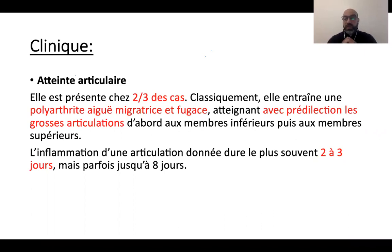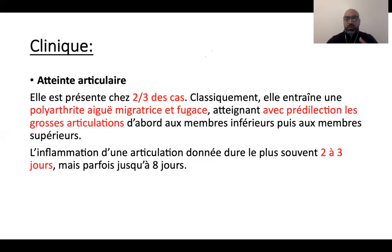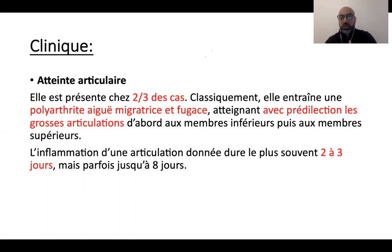Les anticorps contre le streptocoque vont toucher surtout le cœur, les articulations, la peau et le cerveau. Les articulations sont pratiquement les premières touchées, présentes dans les deux tiers des cas. Il s'agit d'une polyarthrite aiguë, migratrice et fugace, touchant les grosses articulations — commençant plutôt par le bas, chevilles et genoux. L'inflammation d'une articulation dure le plus souvent deux à trois jours, parfois jusqu'à huit à dix jours. Lorsqu'une articulation commence à guérir, une autre va être touchée.